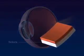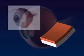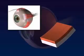The sclera is the outer white layer that maintains the shape of the eye. Muscles attached to the sclera control eye movements.